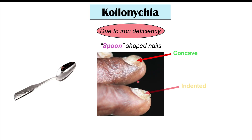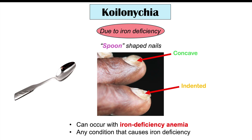The nails are more concave and more indented. Because koilonychia is due to iron deficiency, it can occur with iron deficiency anemia. Celiac disease is not the only cause — anything that causes iron deficiency in general can lead to koilonychia. So this is one potential finding we can see in some patients who have celiac disease.